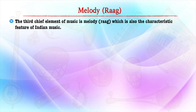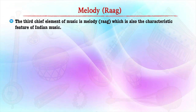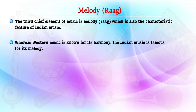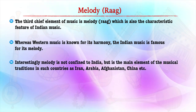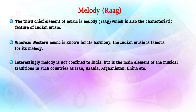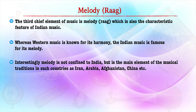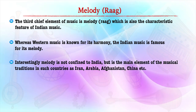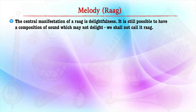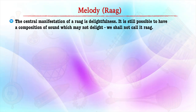The third element is melody, or raga. This is the chief element of music and is a characteristic feature of Indian music. Western music is known for its harmony, but Indian music is famous for its melody. However, the melody is not confined to India — it has certain influences from musical traditions of other countries such as Iran, Arabia, Afghanistan and China. The central manifestation of a raga is delightfulness.